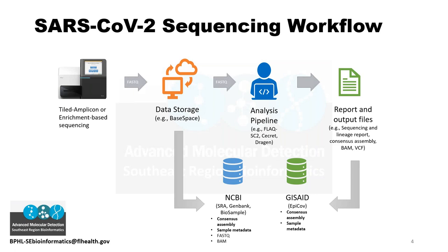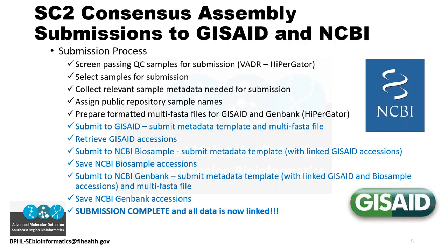Just a reminder of our general SARS-CoV-2 sequencing workflow and the different files we get from it — our consensus assembly and sample metadata — which we're focusing on submitting for parts one through three. In part four, we'll focus on submissions of FASTQ files. Yesterday during part two, we went over creating and screening our samples and creating our multi-FASTA files on HiPerGator. Moving forward, assume you have all metadata collected, samples batched, renamed, and FASTA files ready. Today covers everything in the actual submission part.